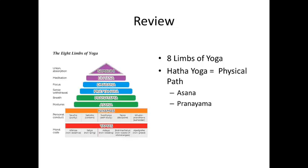These represent Hatha yoga, the physical path. The reason we're doing this out of order is because we are starting with Asana and Pranayama in class this week — we're not wasting any time. Next week we'll take a step back and talk about those social restraints and personal observances. In the future, we will focus on the blue and the purple — those are our four higher order thinking limbs, and I will always refer to them as a group.